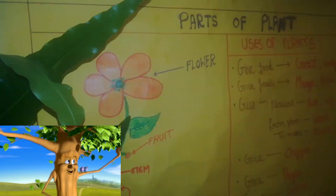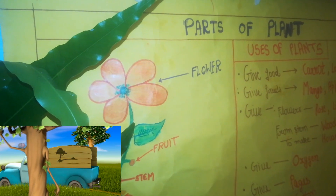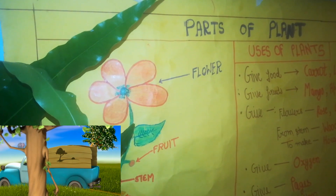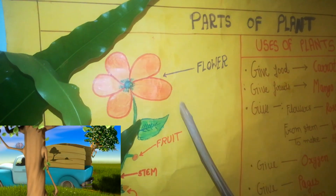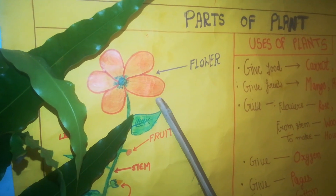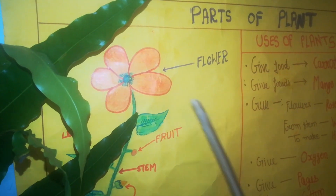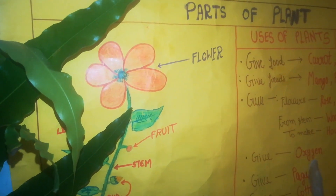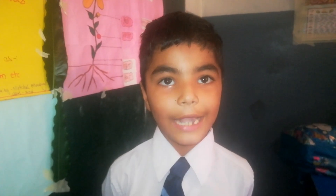Look at the chart and tell me the first part of the plant. It's flower. Very good. It's flower. And now tell me the uses of flower. We can get — very good.